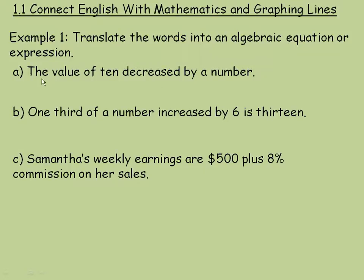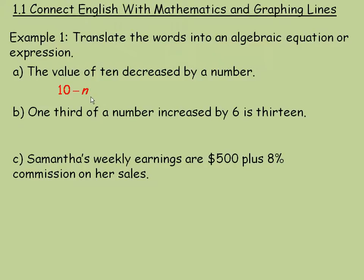The first one: the value of 10 decreased by a number. We start with 10, and 'decreased by' means we are subtracting that number from it. So we write 10 minus n. We could use any variable, but notice the number is subtracted from 10, so it must be 10 minus n. You cannot write n minus 10 — that would be a number decreased by 10, which is not what this says.